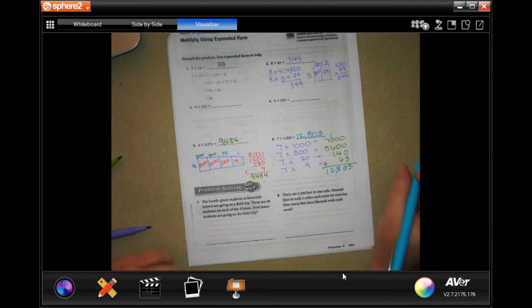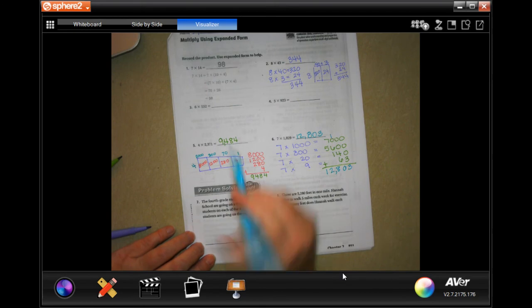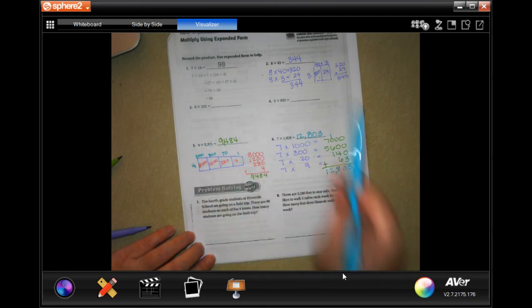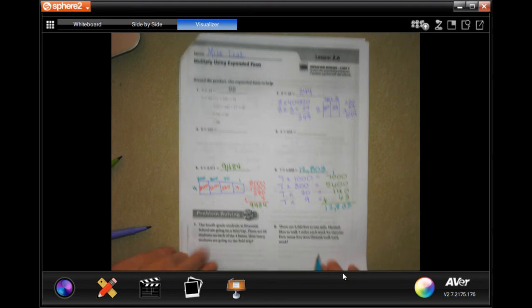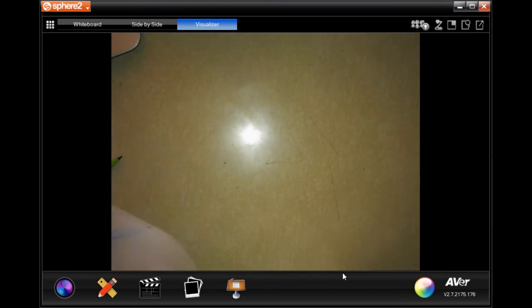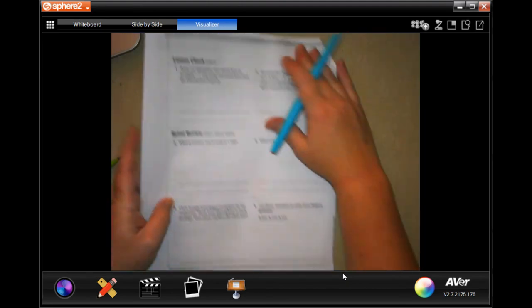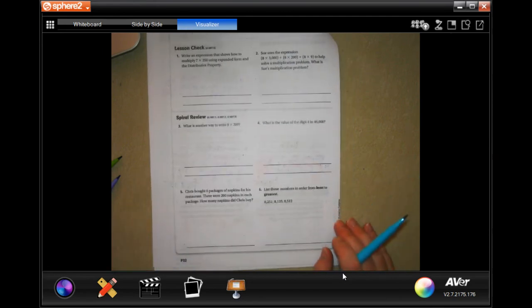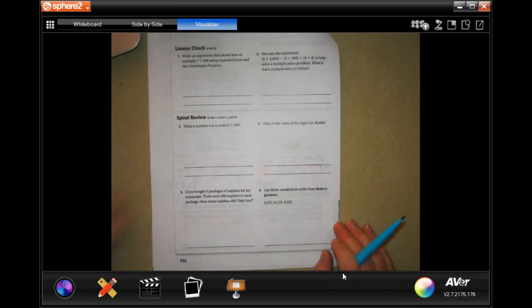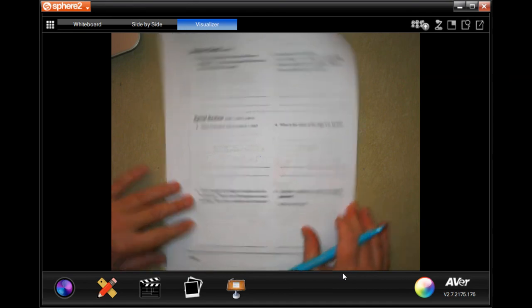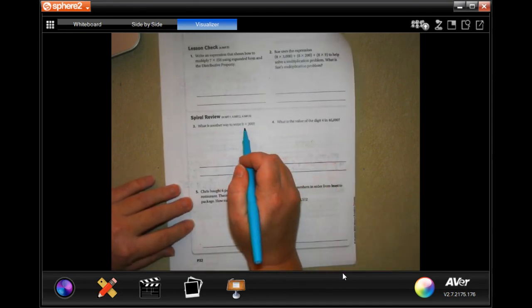Okay, so whichever way you feel comfortable with, go ahead and do it that way. Okay, you guys do seven and eight. So you're going to do three and four, seven and eight on your own. Then you're going to turn it over and you're going to do the lesson check. Okay, you guys totally can. I believe in you.